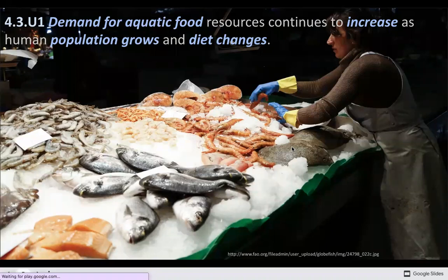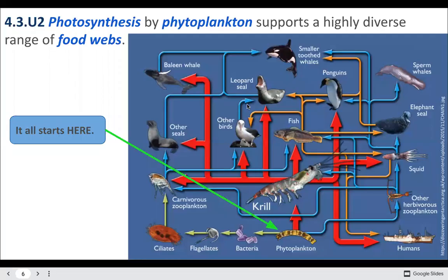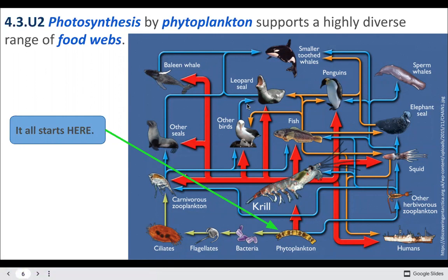The first understanding is that demand for aquatic food resources continues to increase as human population grows and diet preferences change. In the oceans, our food systems are based with phytoplankton as the producers, and those phytoplankton support really diverse food webs. A lot of these food webs actually go to higher trophic levels than land-based food webs do, which also increases their diversity.